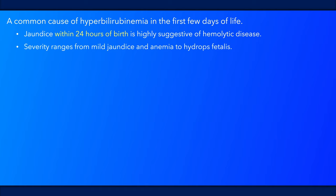Severity ranges from mild hyperbilirubinemia and anemia to hydrops fetalis. Affected newborns may be pale or yellowish due to anemia and hyperbilirubinemia respectively. Hemolysis can also result in hepatosplenomegaly.